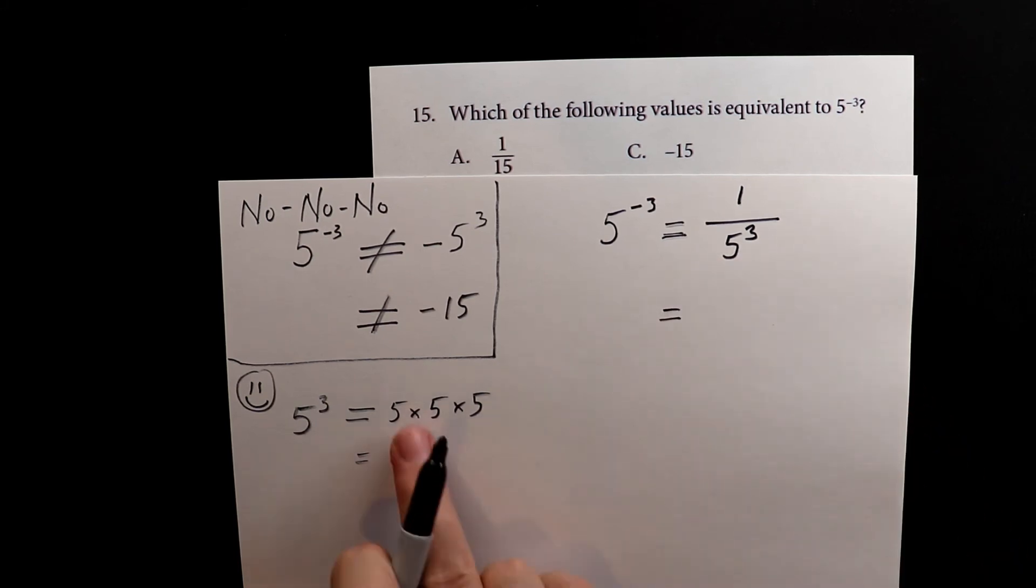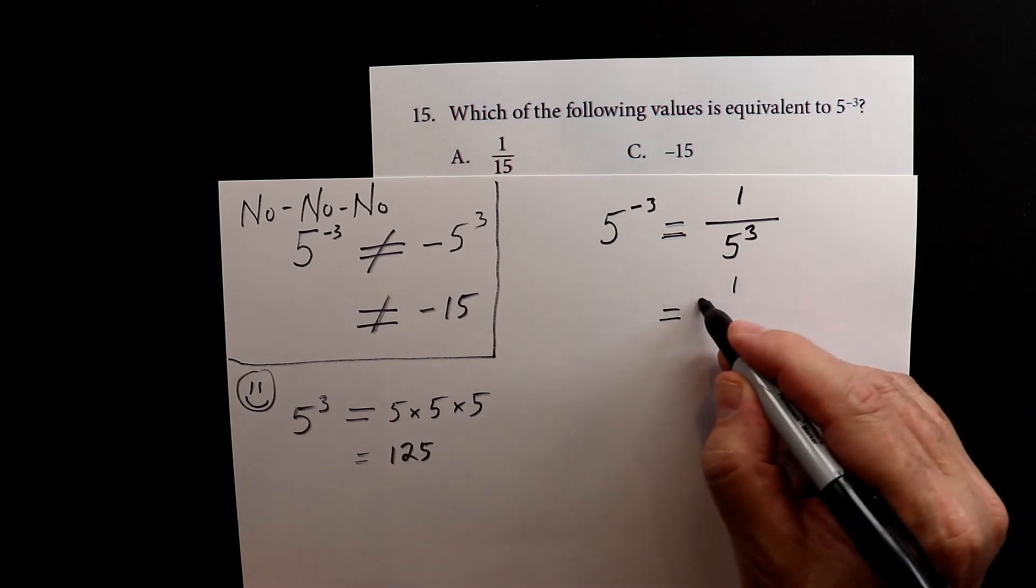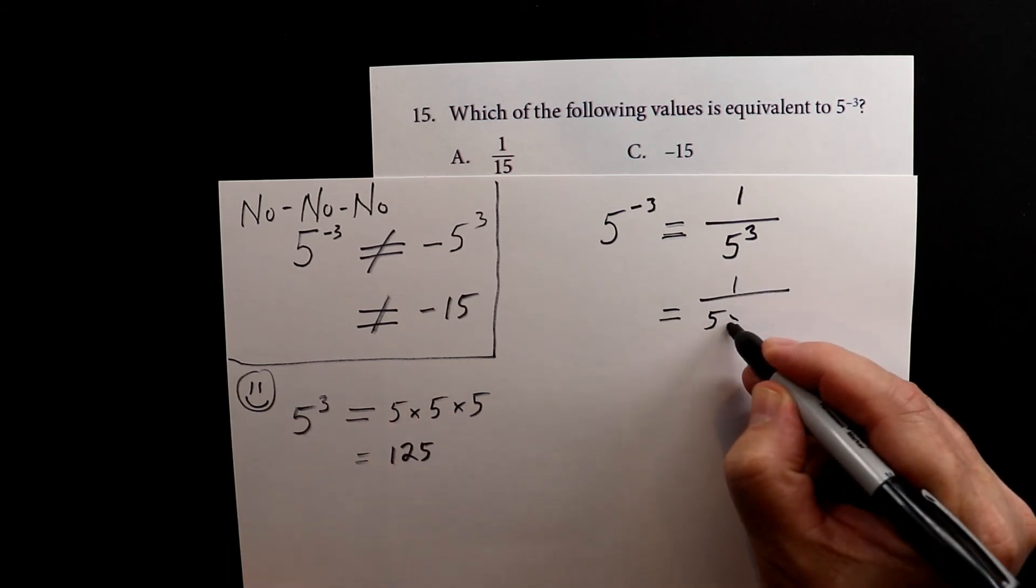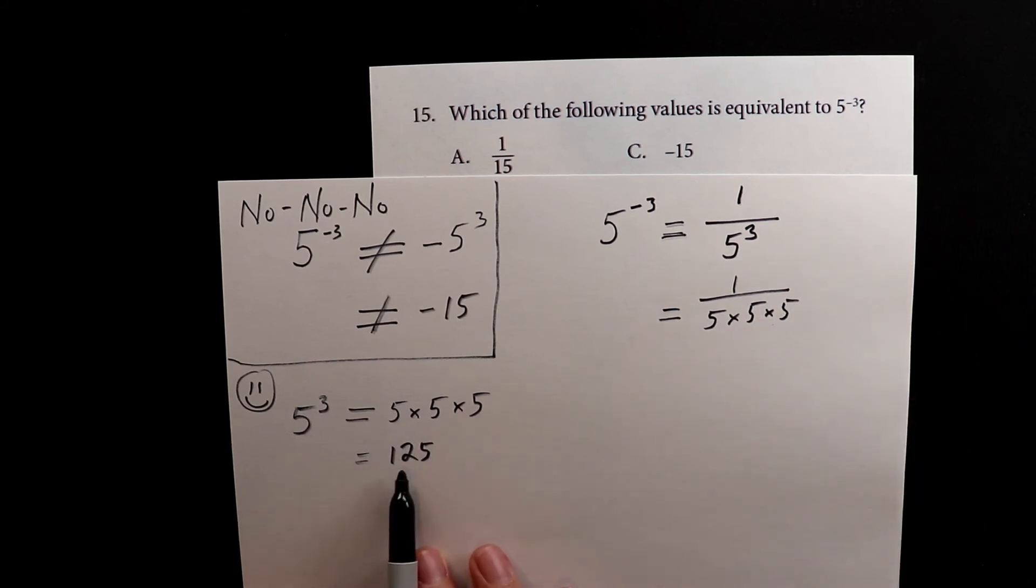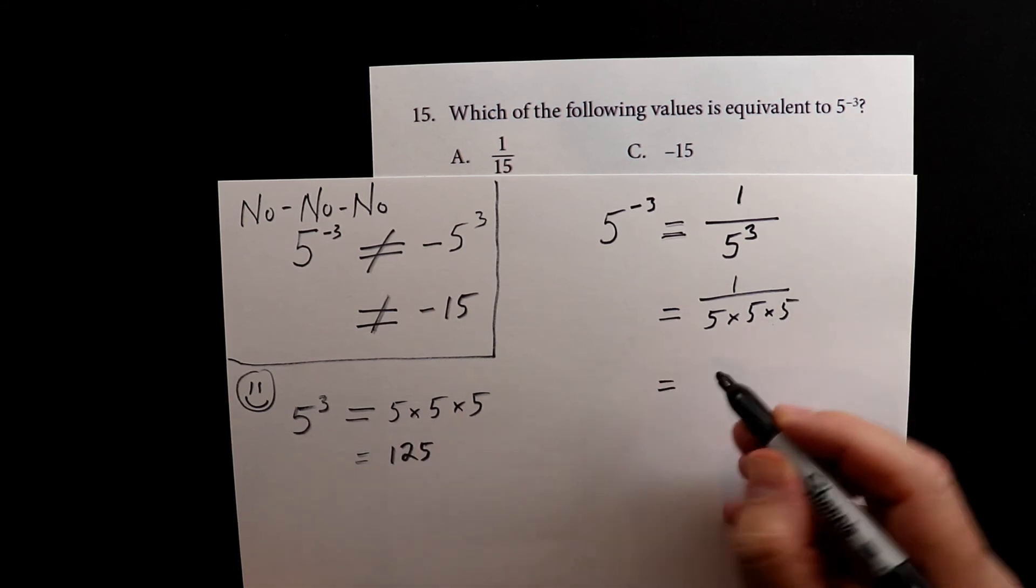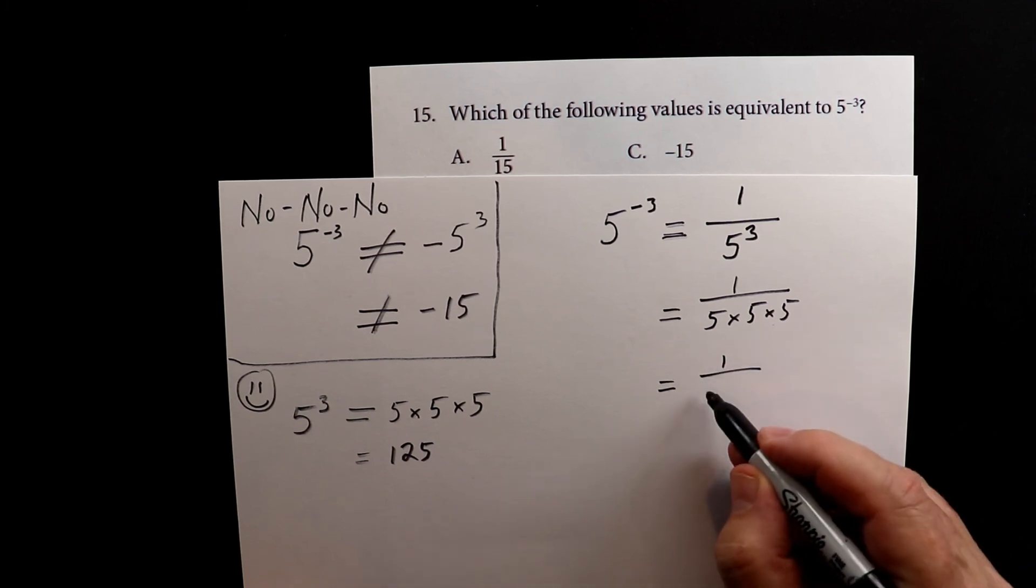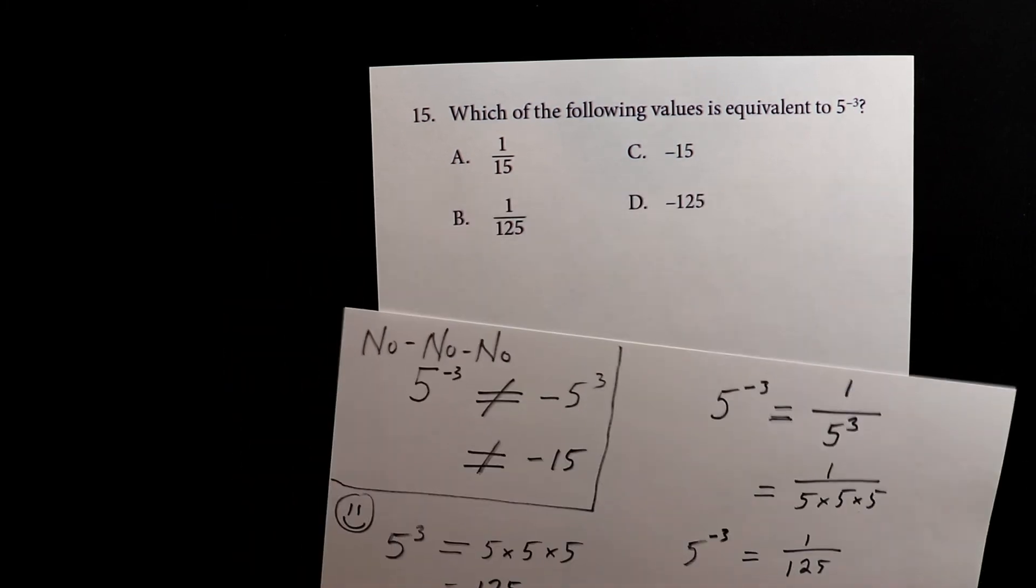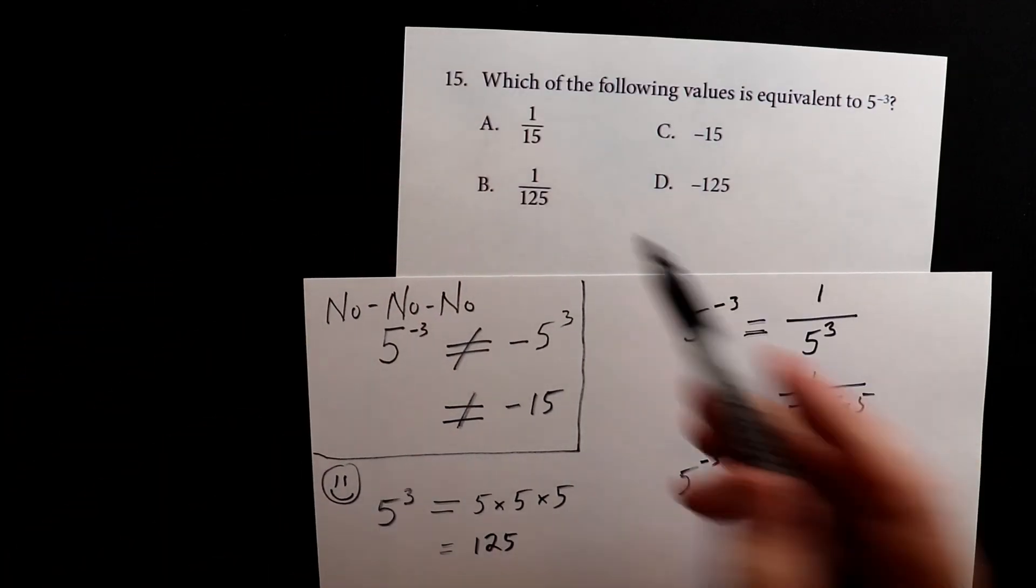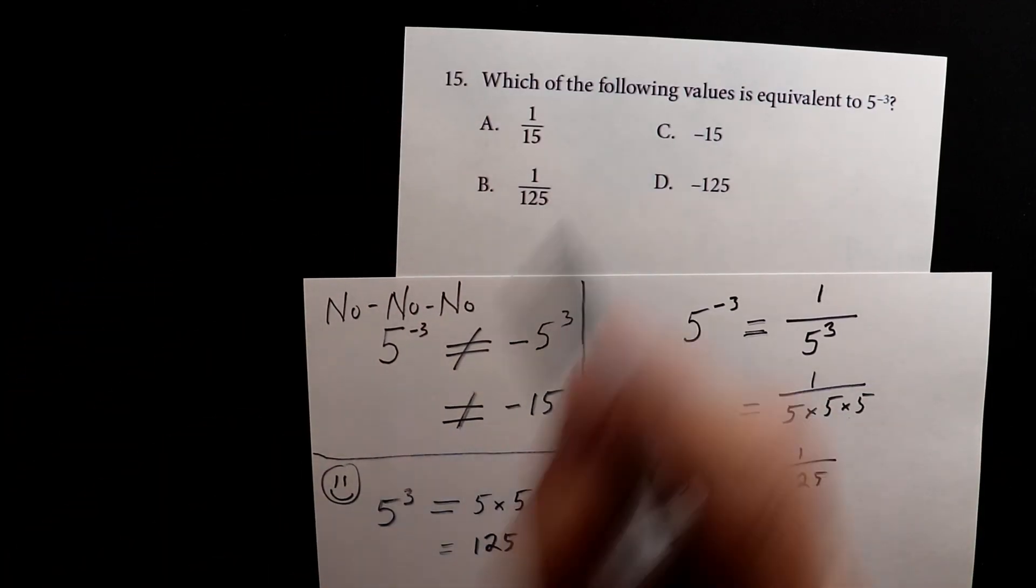And this, we've already seen, is 1 over 5 times 5 times 5. I've already done all the multiplication for you. So this is 1 over 125. And then we check over here, we see it's letter B.